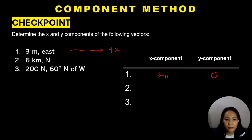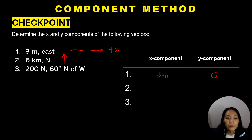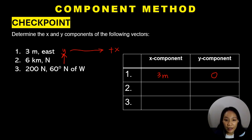Number 2, 6 kilometers north: if you visualize this vector, it is an arrow directed upward or to the north. Unlike number 1, this is exactly along the y-axis. Since it is exactly along the y-axis, we can conclude that it doesn't have any x component — just a y component — that is 6 kilometers.